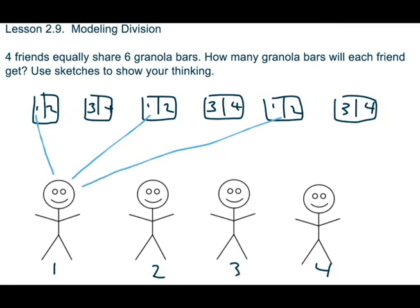Changing colors to friend number two. Friend number two will get all the two halves that are labeled two. So friend number two will get this half, and this half, and this half.